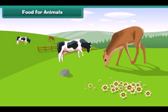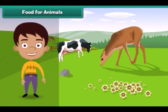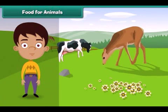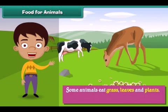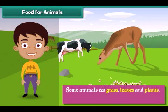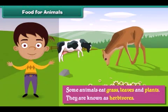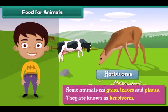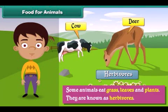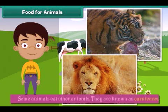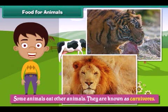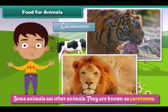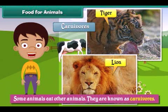Some animals eat grass, leaves and plants — they are known as herbivores. Examples of herbivores are cows, deer etc. Some animals eat other animals — they are known as carnivores. Examples of carnivores are lions, tigers etc.